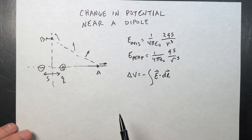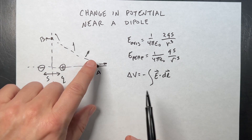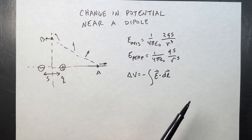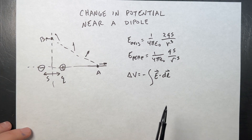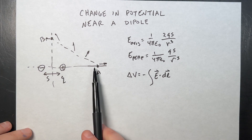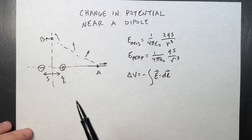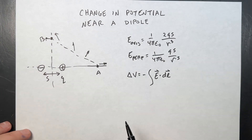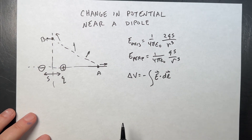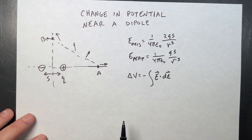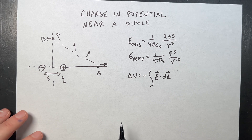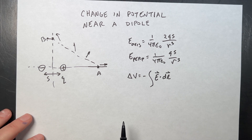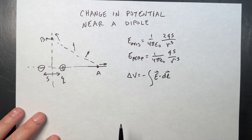The electric field changes direction along the path, so this path integral is non-trivial — not impossible, but non-trivial. However, there is another way, and this is something you see quite a bit.